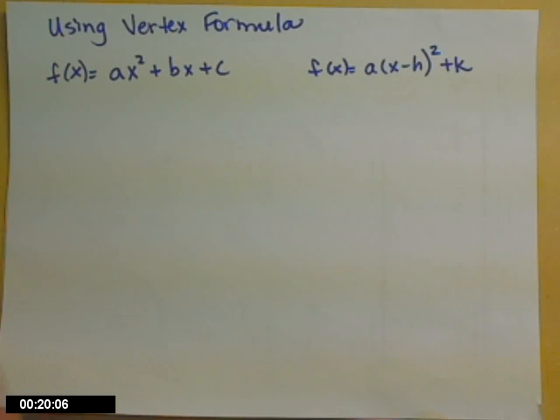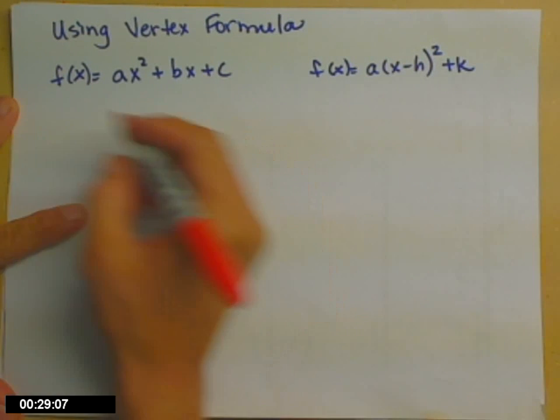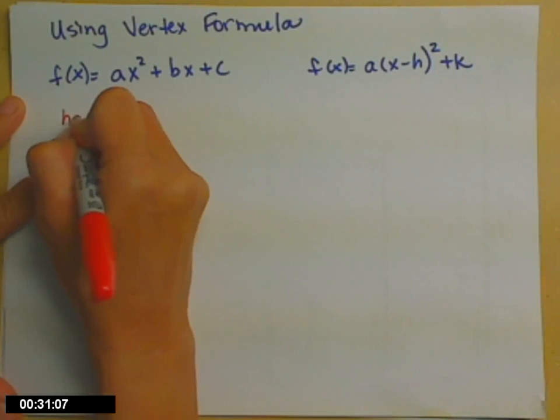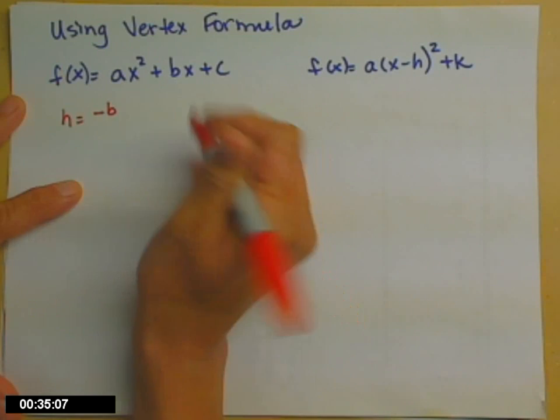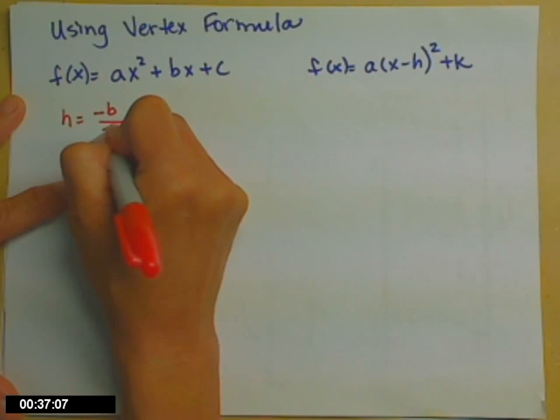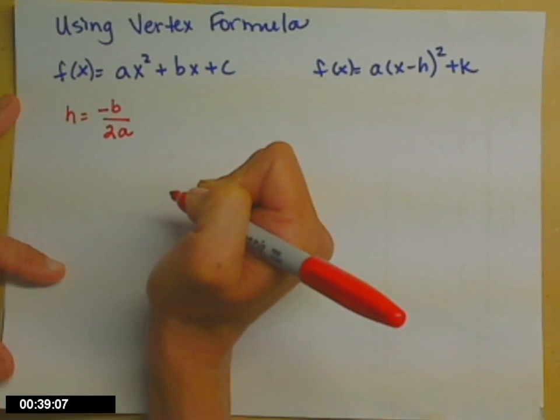But there's a formula, a handy-dandy formula, that relates a, b, and c to a, h, and k. Well, first of all, the a's are the same. But h is equal to the opposite of b, which is your x coefficient, divided by 2 times a.